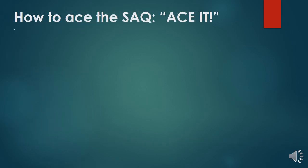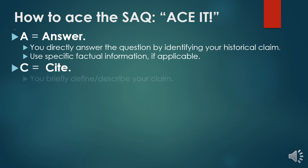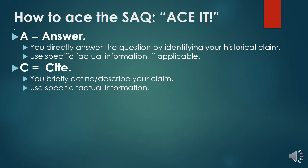We call it ACE IT. To remember what to do with prompts A, B, and C, you just remember ACE. First, you're going to answer the question asked in the prompt — identify your historical claim, your specific answer to that question. Then you're going to cite your example with something specific that briefly defines what you're saying. When we say specific factual information, this is a history class, so we want a specific historical example that defines or describes the claim you're trying to make.